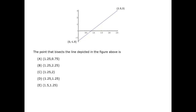This question asks us for the point that bisects the line. That point will be the midpoint of the line. The midpoint between any two points is found by averaging the two points' x-coordinates and the two points' y-coordinates. This can be proved from the Pythagorean Theorem, which also gives us the distance between two points in the coordinate plane.